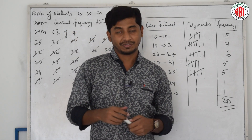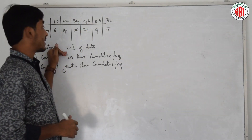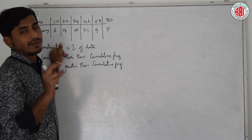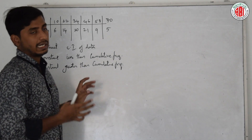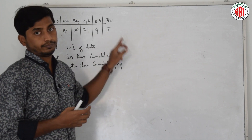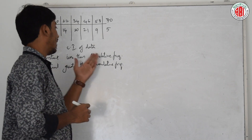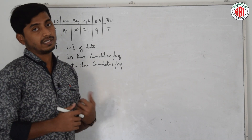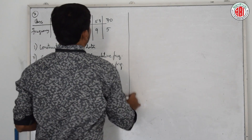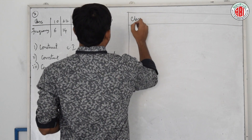Shall we go to the next problem? Here, he has given a table. Before, he gave ungrouped random data and asked us to construct a table. Here he has given data for particular numbers, and he is asking us to construct the class interval, and then the less than cumulative frequency and greater than cumulative frequency. What is this cumulative?